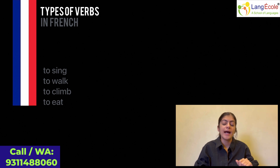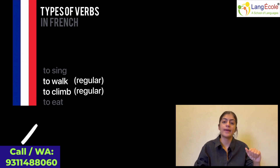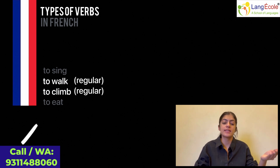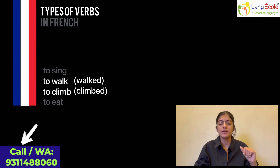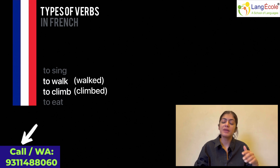Let me help you. I can see two verbs that are regular here — that is, walk and climb. The question is, why? Well, in English, regular verbs are conjugated in the same way and follow the same patterns. For instance, to put walk in the past tense, one adds -ed and it becomes walked. Similarly, to put climb in the past tense, one adds -ed and it becomes climbed. Simply by adding -ed, the verb changes to its past tense.